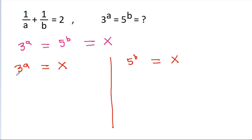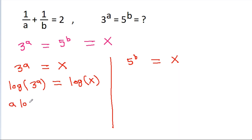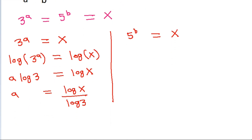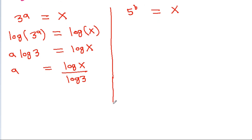If we take log on both sides of 3^a = x, then log(3^a) = log(x), which gives a × log(3) = log(x). Therefore, a = log(x)/log(3), which is log base 3 of x.